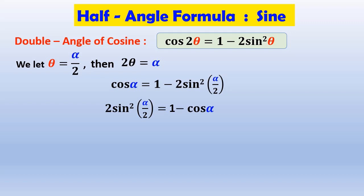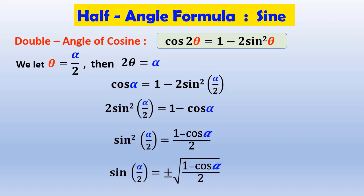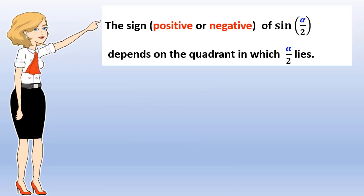We now solve for sine of alpha over 2 — that is, we get sine of alpha over 2 on the left of the equation and everything else on the right. Solving gives us the sine of a half-angle identity. The sign of sine of alpha over 2, whether positive or negative, depends on the quadrant in which alpha over 2 lies.